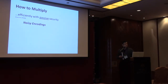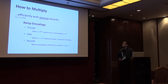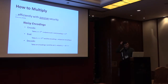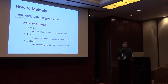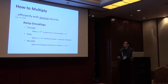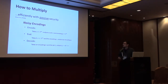Let's look at how to multiply with passive security, focusing on the noisy encoding version from IPS09. A noisy encoding abstractly consists of three algorithms: an encoding algorithm, an evaluation algorithm, and a decoding algorithm. The encoding takes a value or vector as input, outputs a secret key set L, and produces an encoding. The evaluation algorithm is homomorphic: it takes one encoding and additional values B and R, and outputs a modified encoding. The decoding algorithm uses the secret key to output a times b plus r.